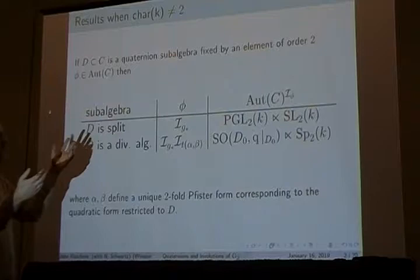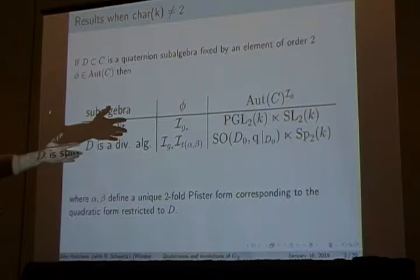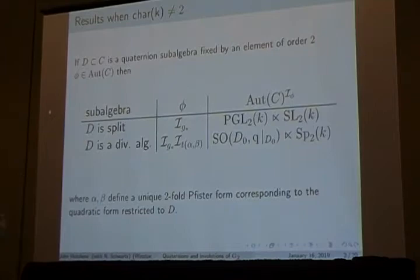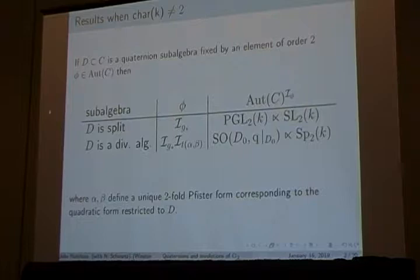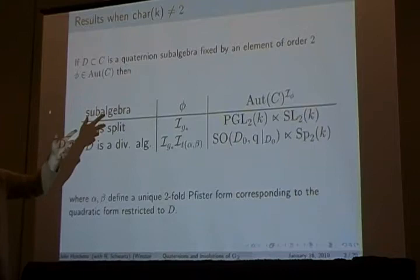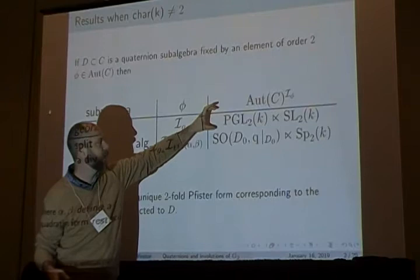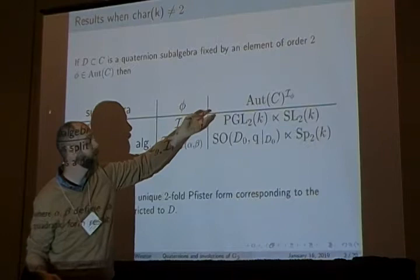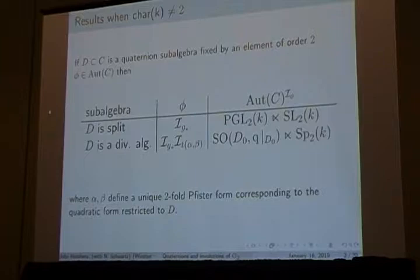For each class of involutions in characteristic not 2, you get a fixed point group — a subgroup of G2 that fixes a quaternion subalgebra of a certain type. We then take the quotient of the whole group with this fixed point group to construct the generalized symmetric space. When D is split, we get PGL2 with essentially SL2. The first part of the product is the automorphism group of the quaternion algebra, and the second part is just the norm 1 quaternions.